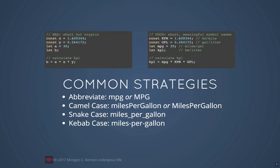More generally, some common strategies for naming variables and constants are: to abbreviate, as in this example; to use camel case, which removes all spaces and capitalizes the second and subsequent words; snake case, which replaces spaces with underscores making the words look like a snake; and kebab case, which replaces spaces with hyphens making the entire name look skewered like a shish kebab.